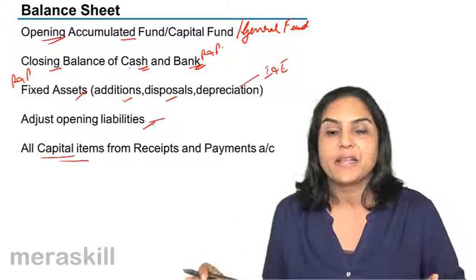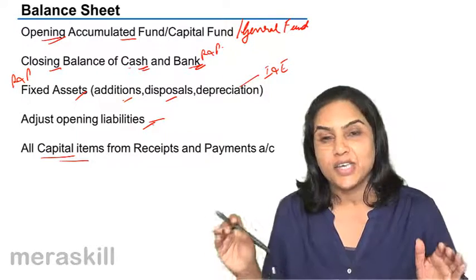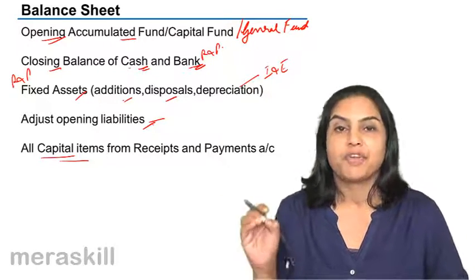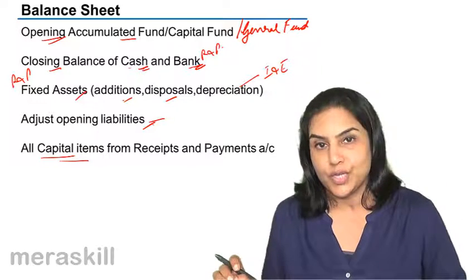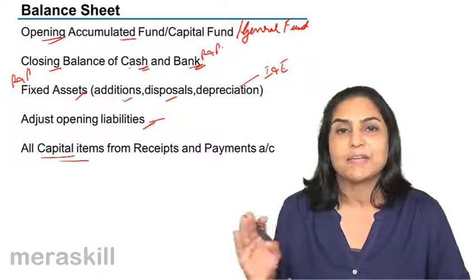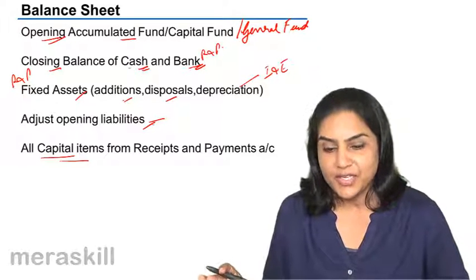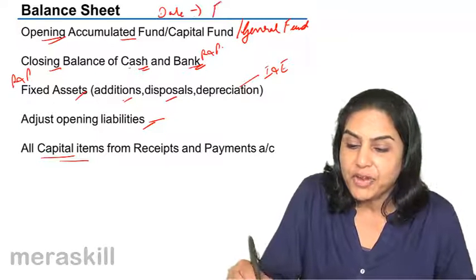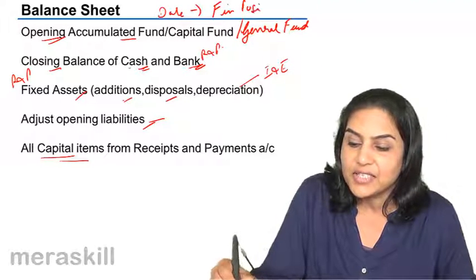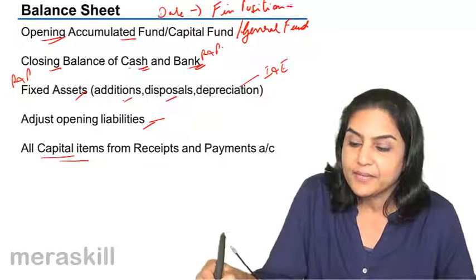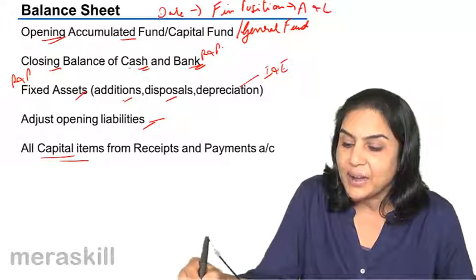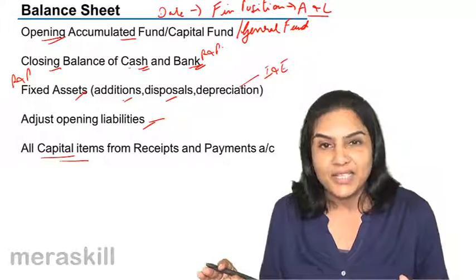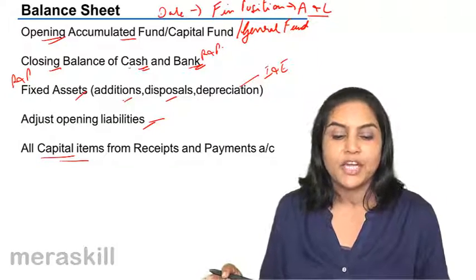With this, we prepare the closing balance sheet and know the financial position of the non-profit organization on the date of closing. The balance sheet is like the balance sheet of a profit organization — it is prepared on a particular date and is a statement of financial position consisting of assets and liabilities. A balance sheet is a statement, not an account; it is a statement of the assets and liabilities on a particular date.